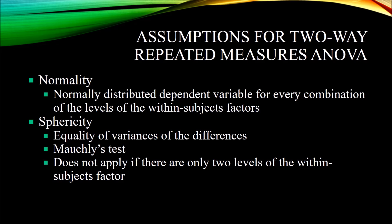One test for normality is the Shapiro-Wilk test. We typically use an alpha of 0.05. The Shapiro-Wilk test produces a p-value, which we compare to the alpha. If the p-value is less than 0.05, we take that as an indication that we are violating the assumption of normality. If the p-value is greater than 0.05, that leads us to believe we are looking at a normal distribution. You also want to consider skewness and kurtosis, as well as the histogram for each of these combinations.